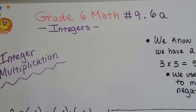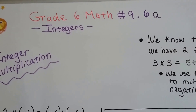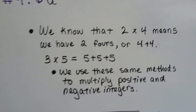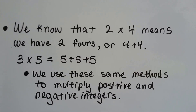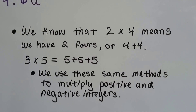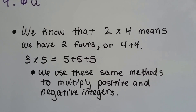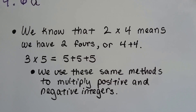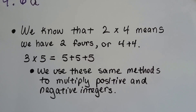Grade 6 math, number 9.6a: Integer Multiplication. We know that 2 times 4 means we have two 4s, or 4 plus 4. And 3 times 5 means 5 plus 5 plus 5 — we have three 5s. We use these same methods to multiply positive and negative integers.